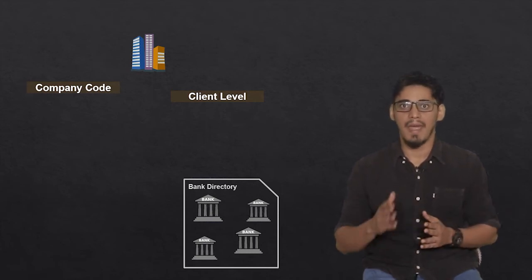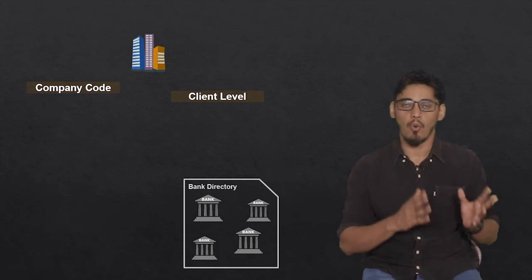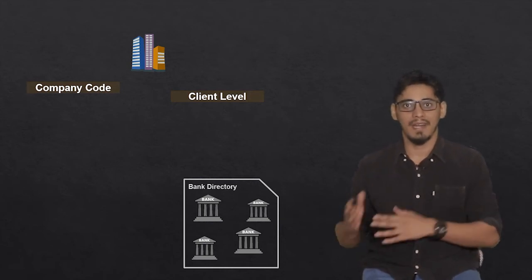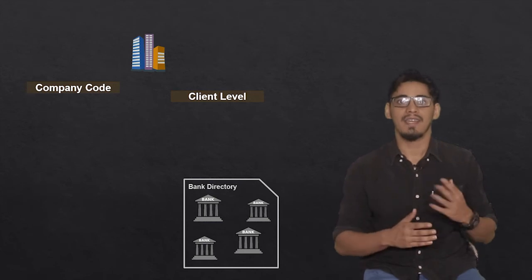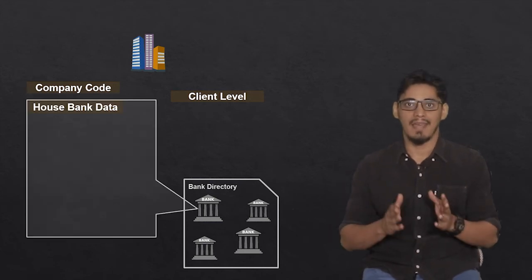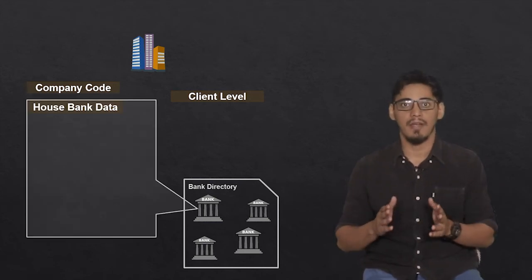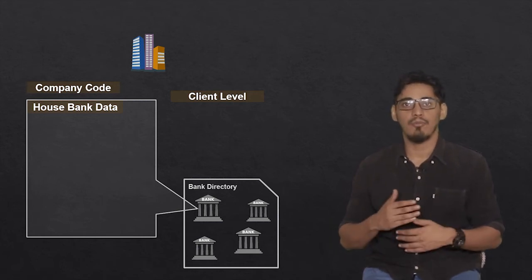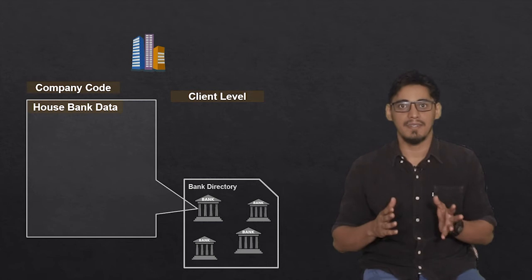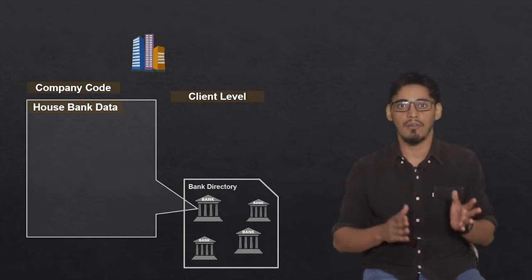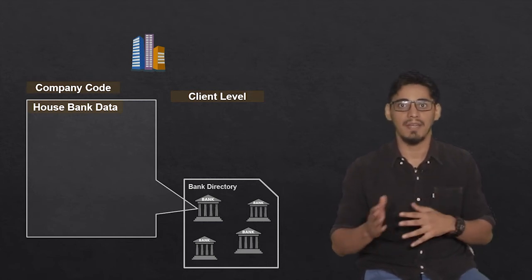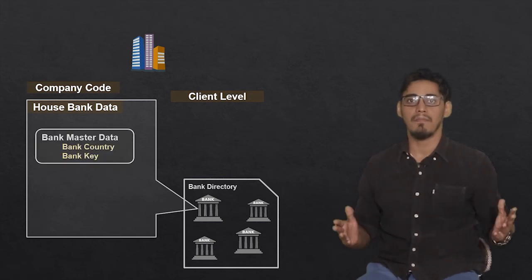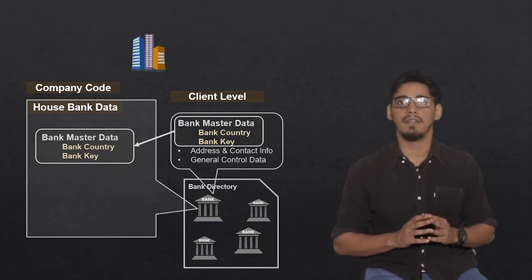From this list of banks, the banks that your company code decides to deal with or interact with — those banks have to be created as a house bank in the SAP S4HANA application. For that, additional data must be maintained for the combination of house bank and company code, which includes bank master data containing the address and contact information.